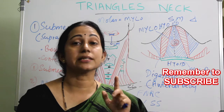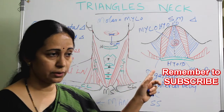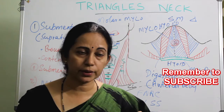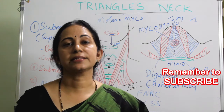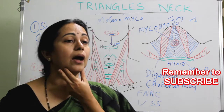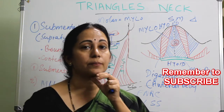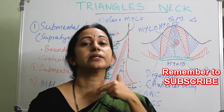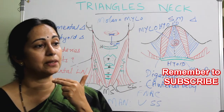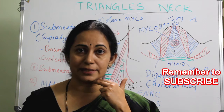The actions of the mylohyoid muscle include helping in swallowing, mastication, and speaking. While speaking, the mylohyoid elevates the hyoid bone and depresses the mandible. So the mylohyoid muscle is important in speaking and eating — both chewing and swallowing.